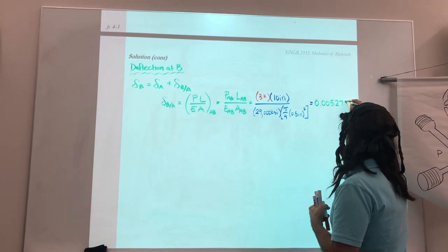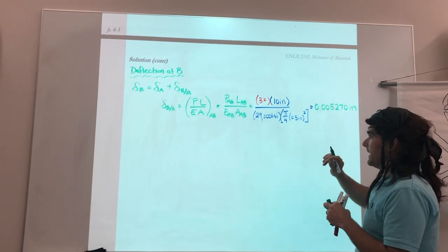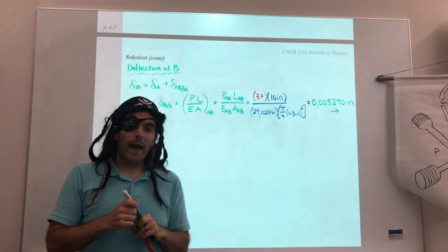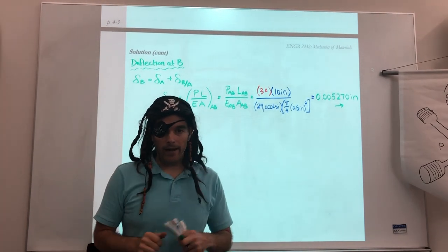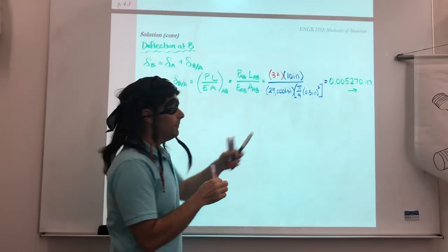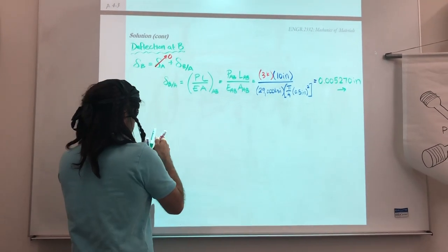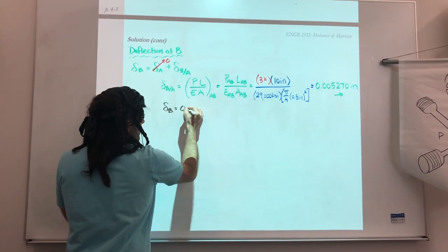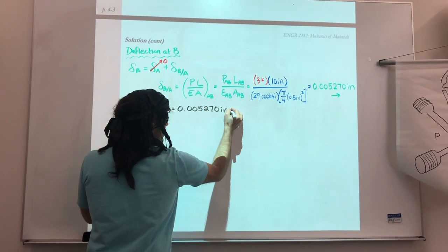You should get 0.00527 inches. It's a positive number, so that means it's going to be extension or that our point is moving to the right. So if you look back to our original problem, because AB is in tension, B is shifting to the right by a value of 0.005270 inches. Now, strictly speaking, we'll plug this back up into this equation. But remember, delta A was 0 because it was a fixed end. So now we can get to our result. Delta B equals 0.00527 inches to the right. There we go. We're on our way to solving Hooke's Law. Let's try point C.